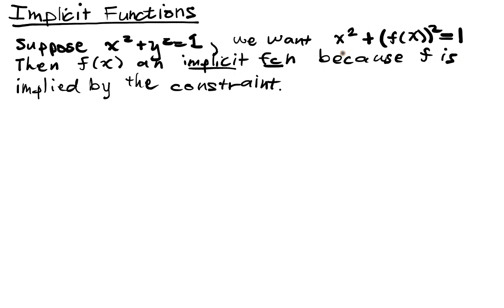In this circumstance, we can actually solve for f of x. It's not always the case that we can do that, but in this case, we solve for f of x by first taking x over to one side, so we have 1 minus x squared. And then f of x is either equal to the positive or the negative square root of 1 minus x squared.